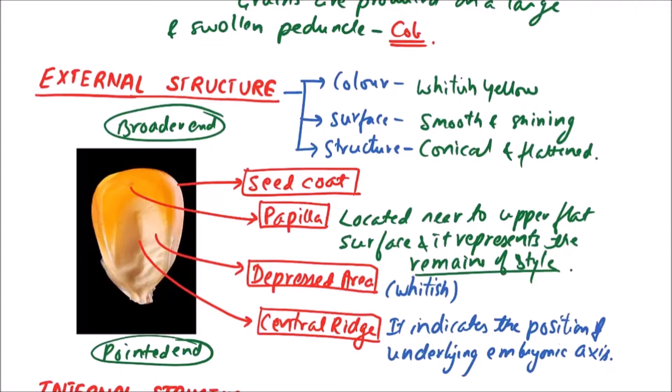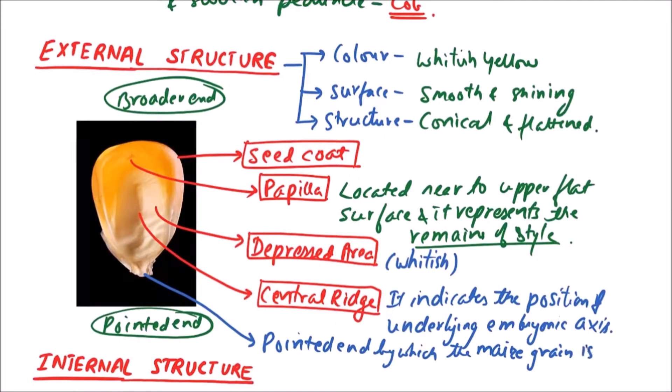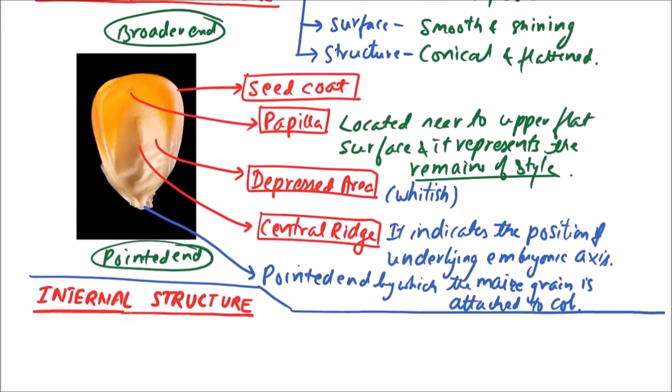Now maize grain is attached to cobb by this pointed end. So this is about the external structure of maize grain. Now we'll discuss the internal structure of maize grain.